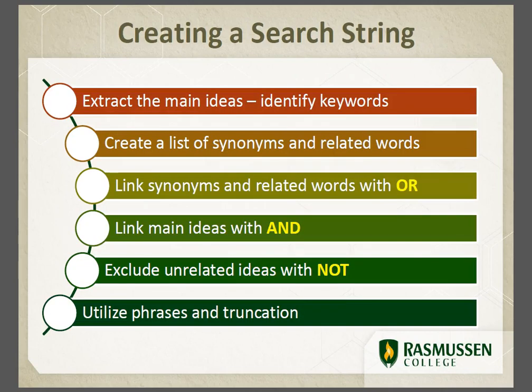There are six steps to creating a search string: extract the main ideas and identify keywords; create a list of synonyms and related words; link synonyms with OR; link main ideas with AND; exclude unrelated ideas or unwanted terms with NOT; and utilize phrasing and truncation to narrow or broaden the number of results.